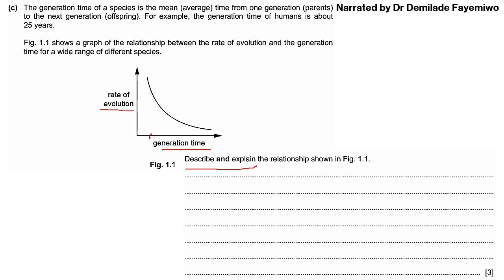When generation time is low, the rate of evolution is high. Evolution means organisms are changing over time and responding to natural selection. When generation time is high, the rate of evolution becomes lower — the rate at which organisms are responding to evolutionary pressures is quite low. That's possibly why we humans haven't evolved into anything dramatically different.